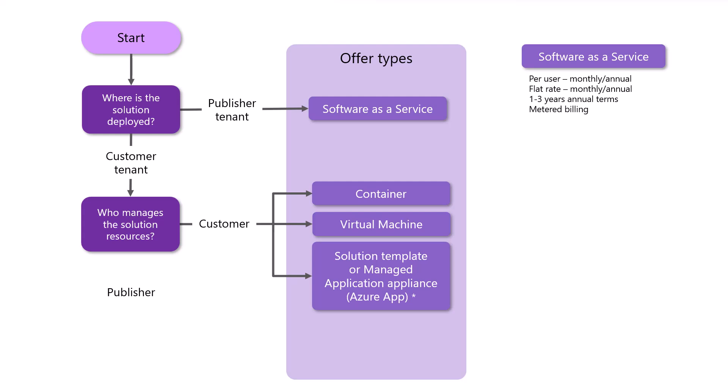Let's take a look at pricing for both containers and virtual machines. With virtual machines, we're able to charge via CPU — specifically the number of CPUs someone's using on their virtual machine or the CPU size. We can also provide flat rate pricing, and you can even make your virtual machine available for free. Lastly, there are one- or three-year pricing options called reserved pricing, where your customer can sign up and get pricing for that term versus the default monthly billing option.